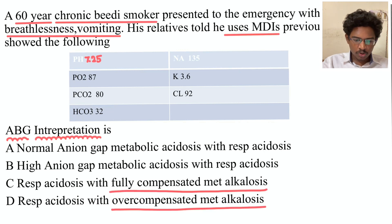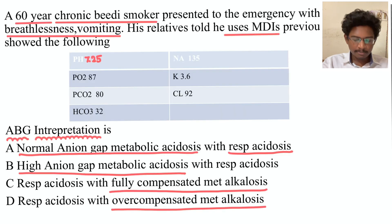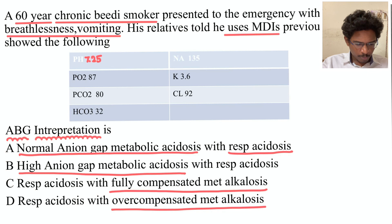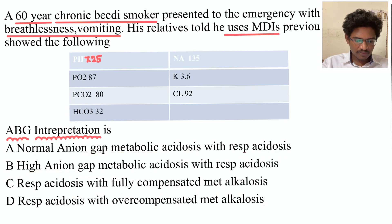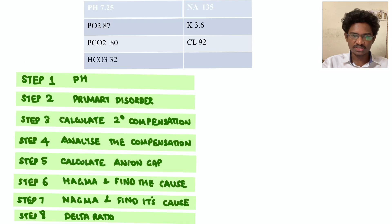Next question: a 60-year-old chronic heavy smoker presented to the emergency with breathlessness and vomiting. Relatives report he uses metered-dose inhalers. ABG: pH 7.5 — wait, let me re-read — pH less than 7.35, PCO2 80, bicarb 32. The options are: NAGMA with respiratory acidosis; HAGMA with respiratory acidosis; respiratory acidosis with fully compensated metabolic alkalosis; or respiratory acidosis with over-compensated metabolic alkalosis.